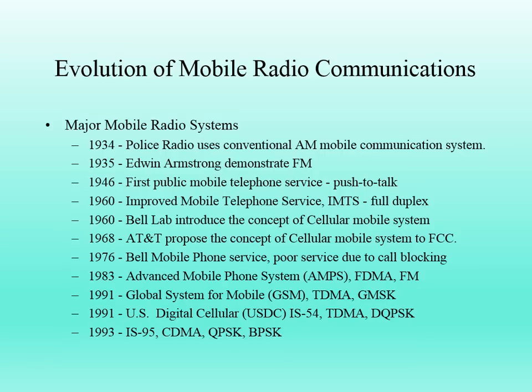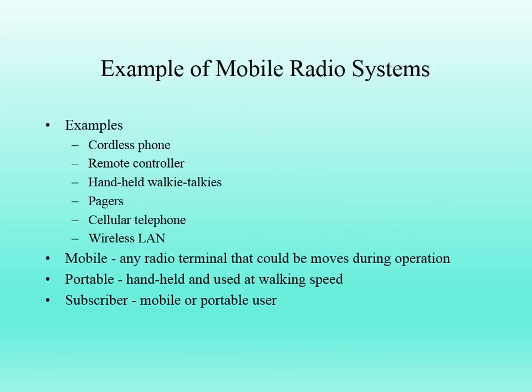People nowadays mostly use GSM mobiles rather than CDMA. Now let's look at examples of mobile radio systems. Cordless phones used at home are called indoor cordless systems, and those used outside are called outdoor cordless phones. The second example is remote control — like a DVD player or TV remote control.